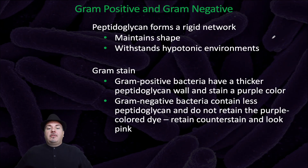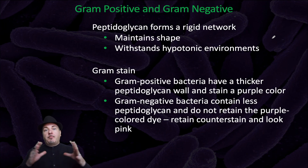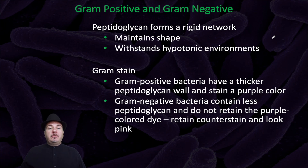Peptidoglycan forms a rigid network. It helps to maintain the shape of the bacteria, and it withstands hypotonic environments. When cells are placed in a hypotonic environment, they'll start taking in water molecules. What prevents the cell from swelling up and bursting open due to that influx of water is that peptidoglycan layer.